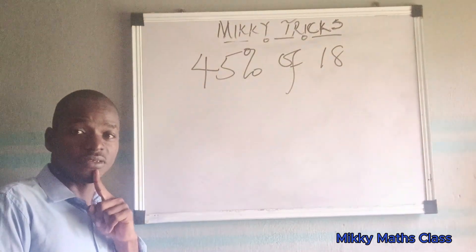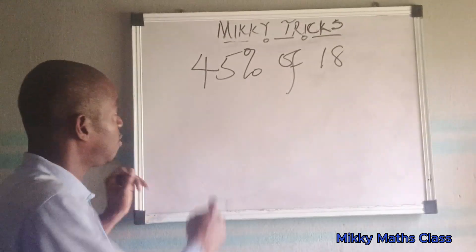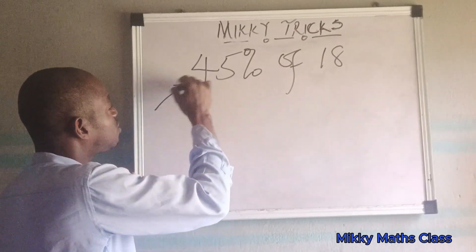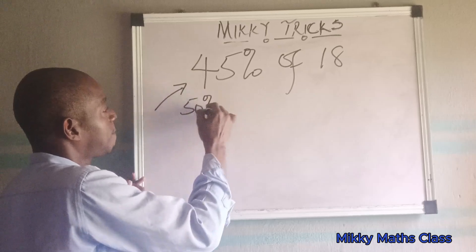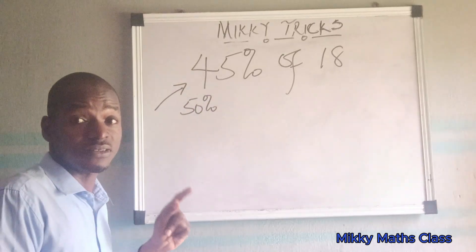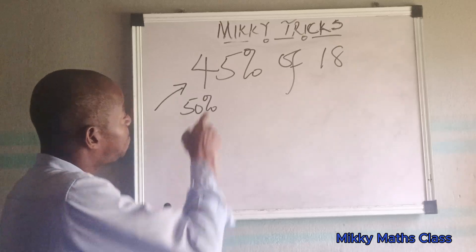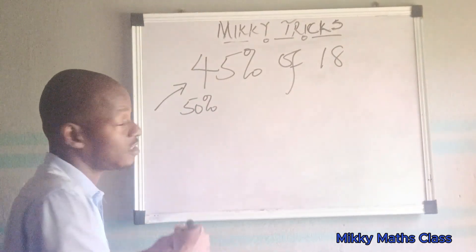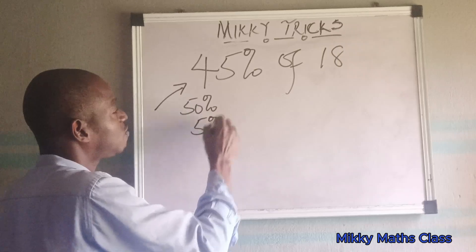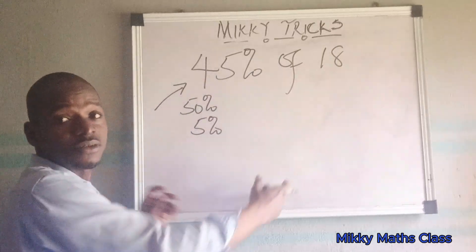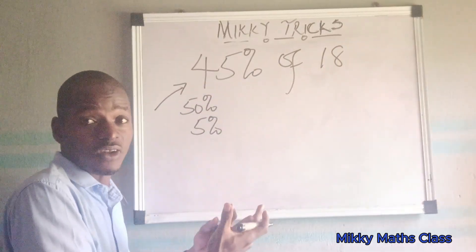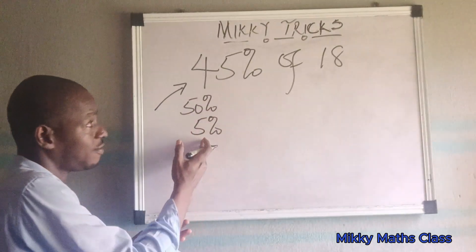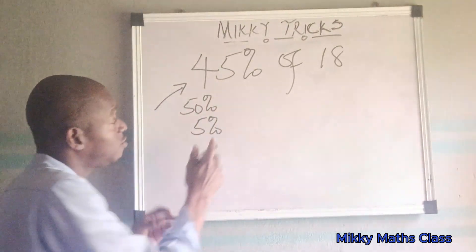45% is closer to 50%, so we can break it down as 50% minus 5%. Find 50% of the number and 5% of it, then subtract them, because 50 minus 5 gives us 45.